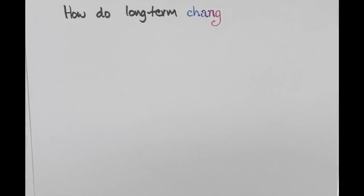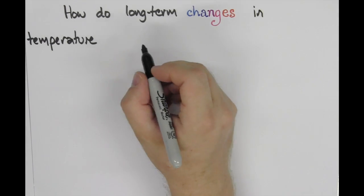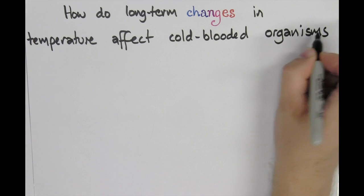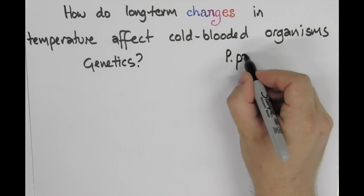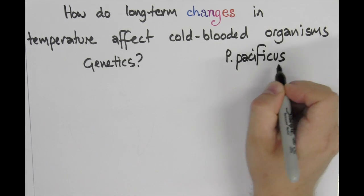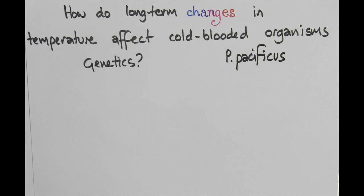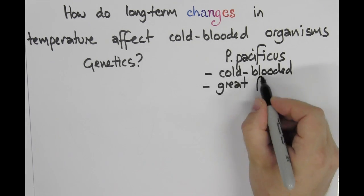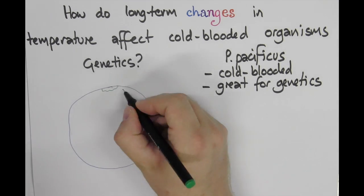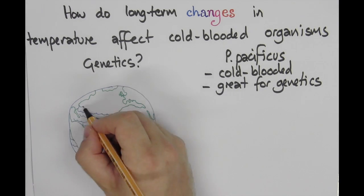I'm interested in the genetics of how organisms adapt to higher temperatures and I've chosen to study this in the nematode Pristioncus Pacificus for three reasons. It's cold-blooded, it's great for genetics, and we have a collection of strains from all over the world.